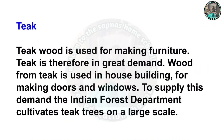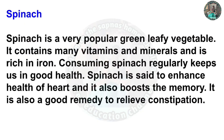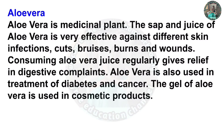Teak: Teak wood is used for making furniture and is therefore in great demand. Wood from teak is used in house building — for making doors and windows. The Indian Forest Department cultivates teak trees on a large scale. Spinach: Spinach is a very popular green leafy vegetable. It contains many vitamins and minerals and is rich in iron. Consuming spinach regularly keeps us in good health. Spinach is said to enhance heart health and boost memory; it is also a good remedy to relieve constipation. Aloe vera: Aloe vera is a medicinal plant. The sap and juice of aloe vera is very effective against different skin infections, cuts, burns, and wounds. Consuming aloe vera juice regularly gives relief in digestive complaints. Aloe vera is also used in treatment of diabetes and cancer. The gel of aloe vera is used in cosmetic products.